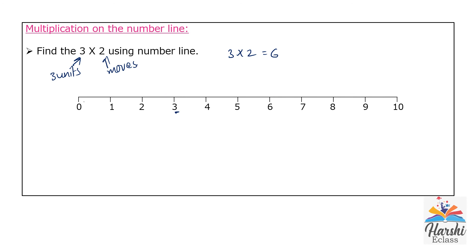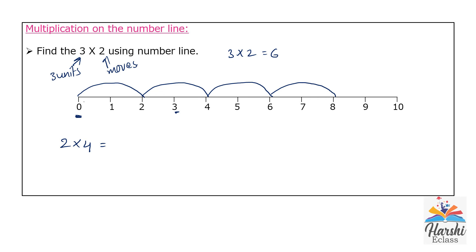One more example: 2 times 4. Start from 0, move 2 units at a time, making 4 total moves. After 4 moves of 2 units each, we reach 8. The product of 2 and 4 is 8. In this way we can calculate products of large numbers. Addition and subtraction can also be performed on the number line.